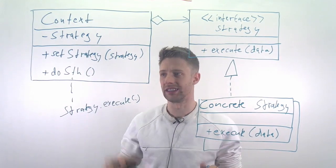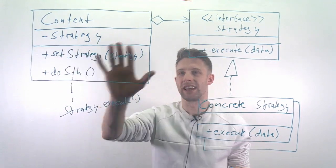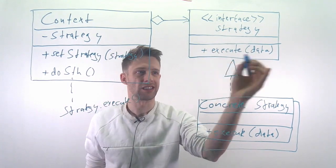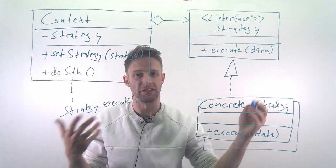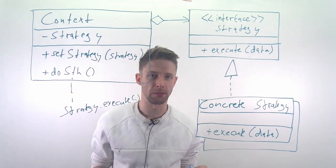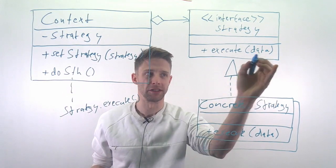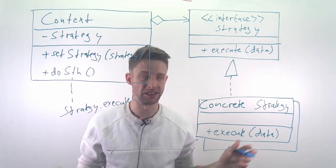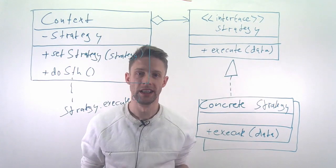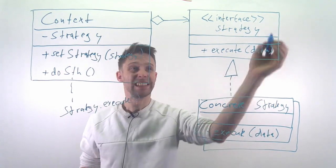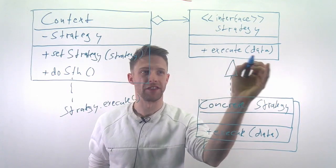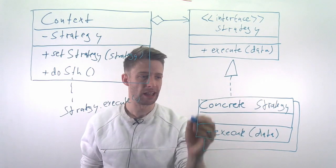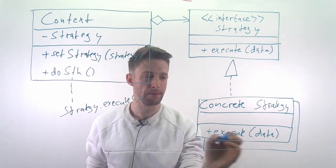This is just where the actual functionality is happening. This context then has a strategy and this strategy has an execute function, execute and it takes some kind of data that depends on your application. If it's the routing application for instance, you probably have some kind of source and target or origin and target destination where do you want to go and then the algorithm gives you a way. This is an interface, so it's just that we define that we have this method and then a concrete realization of that interface would be a concrete algorithm that implements this method.